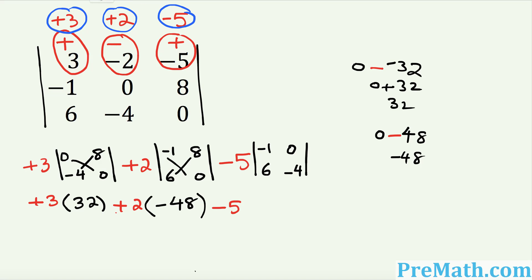The last term is negative 5 times its determinant. Cross-multiply: negative 1 times negative 4 is positive 4, put a minus sign, then 6 times 0 is 0. So 4 minus 0 equals 4. Write negative 5 times 4.